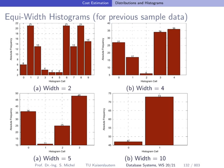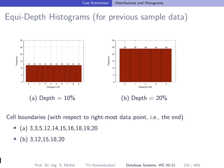Here are some sample equi-width histograms with 2, 4, 5, and 10 buckets. It's easy to see how they are created. You can observe the steps from 2 to 4: two neighboring buckets merge into one. On the x-axis I've just enumerated the histogram cell IDs — from 0 to 9, or 0 to 4 for 5 buckets — rather than the real attribute values. Equi-depth histograms are a bit more unusual but have a big benefit over equi-width histograms.